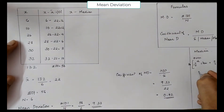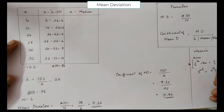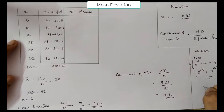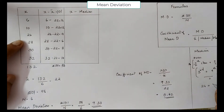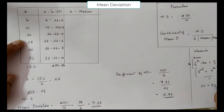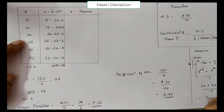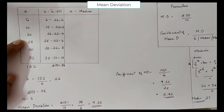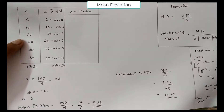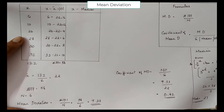The third item is 26 and the fourth item is 28. The average of 26 and 28 divided by 2 is equal to 27. So the median is equal to 27.